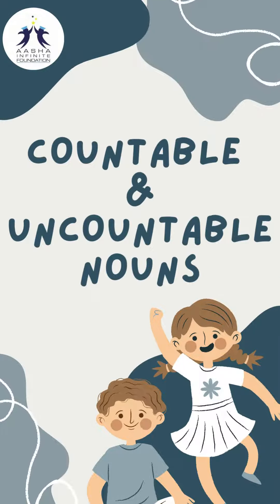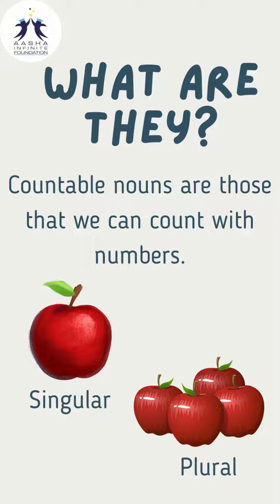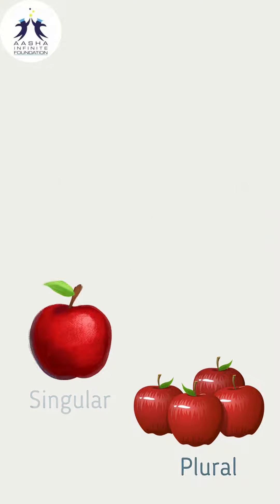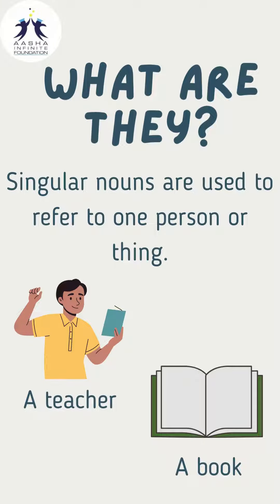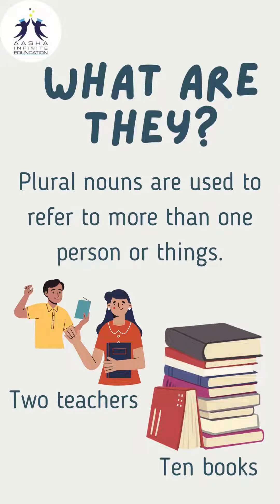Countable and uncountable nouns. Countable nouns are those that we can count with numbers, for example one apple or four apples. Countable nouns have two types: singular and plural. Singular nouns are used to refer to one thing or person, for example a teacher or a book. Plural nouns are used to refer to more than one thing or person.